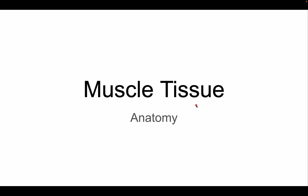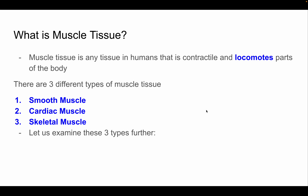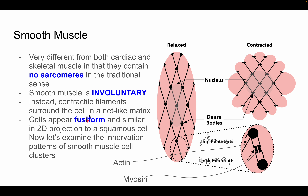Welcome to a lecture on muscle tissue. We need to understand muscle tissue and its types before getting into skeletal muscle. Muscle tissue is any tissue in humans that is contractile and locomotes — meaning moves — parts of the body. There are three different types in humans: smooth muscle, cardiac muscle, and skeletal muscle.